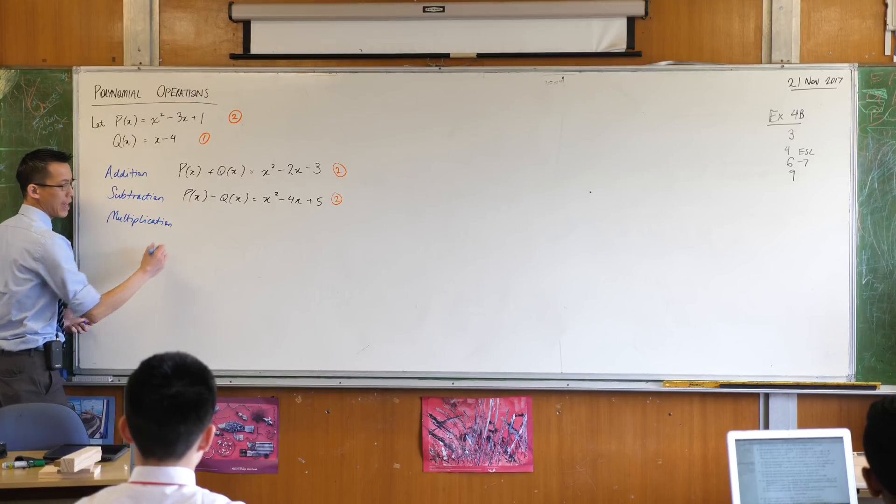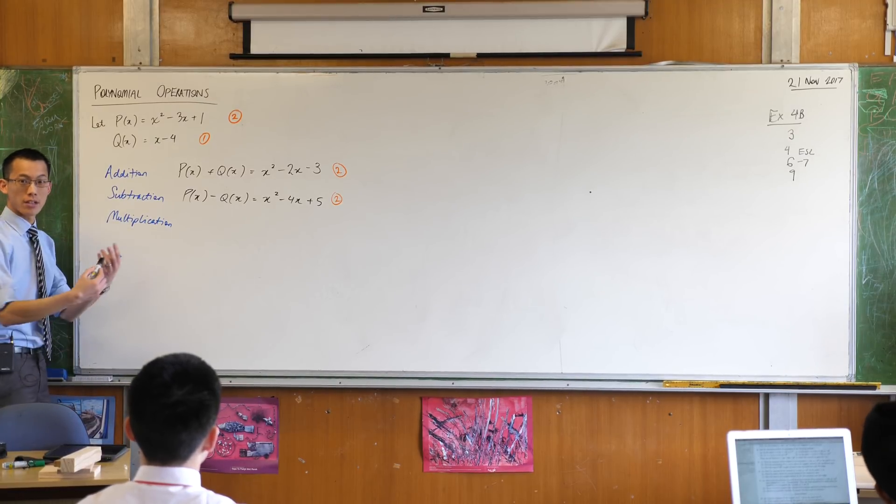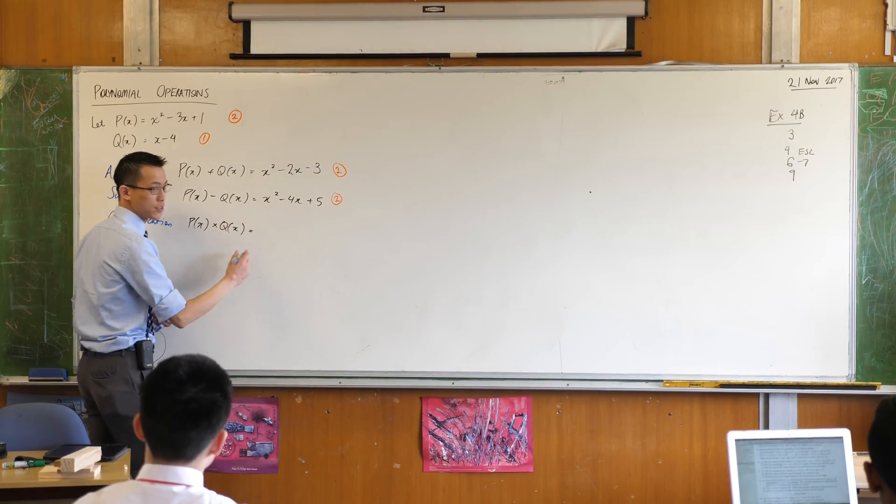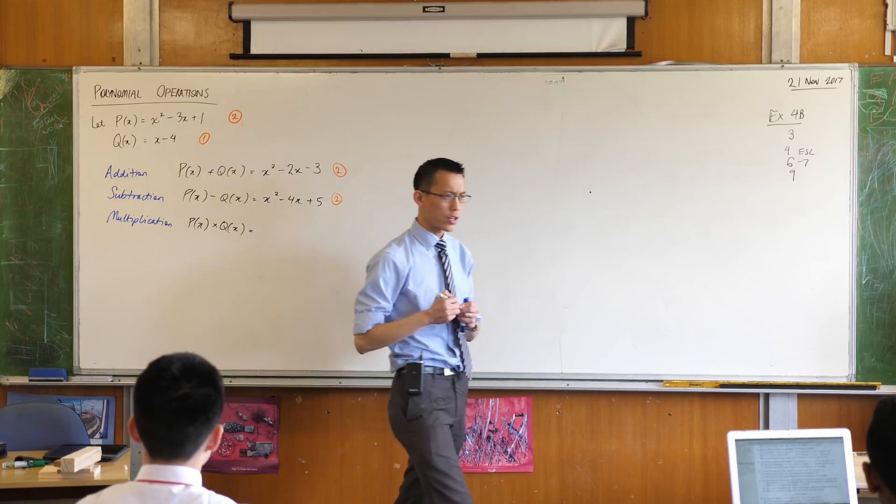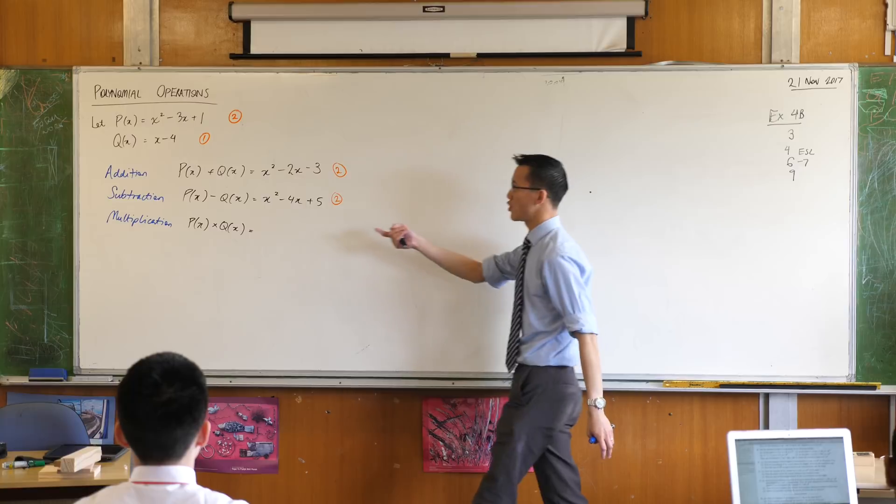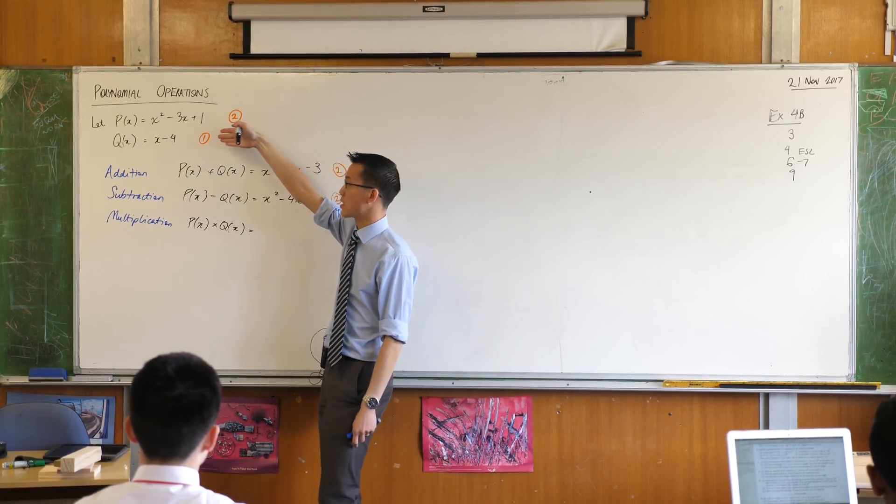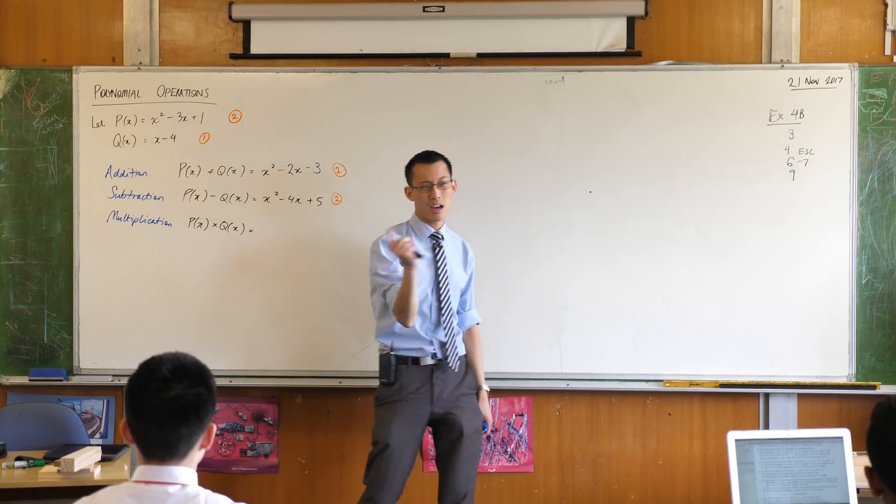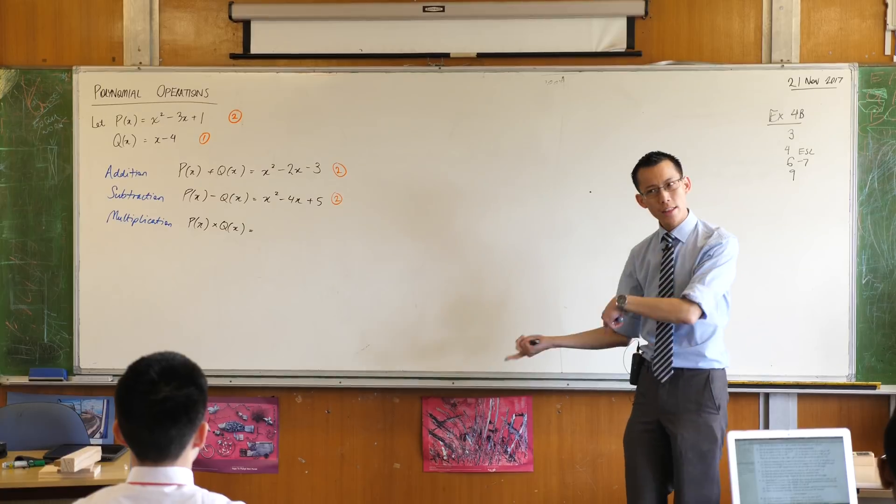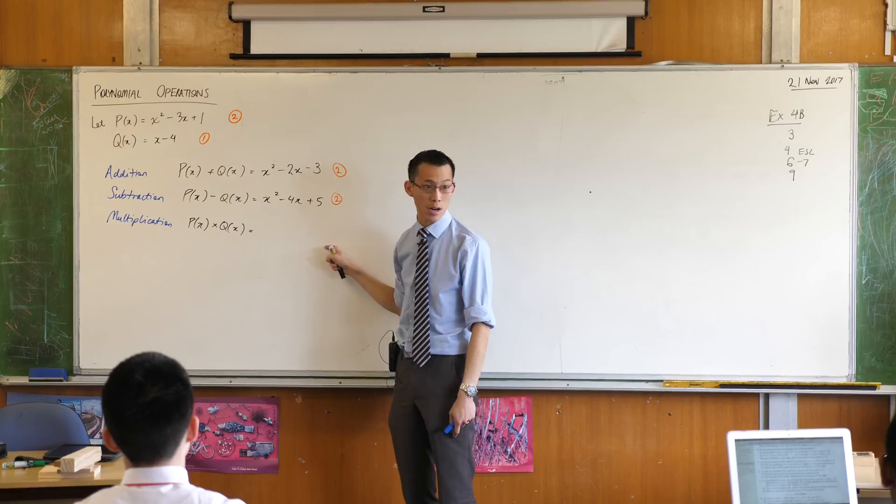If I instead don't add or subtract but multiply these two, if I say p of x times q of x, I want you to make a prediction. What's going to happen to the degree? Well, you've got degree 2 times degree 1. And these are just, well, you're just going to do some index laws stuff, right? So when you've got stuff which has a power of 2 and you multiply it by stuff which has a power of 1, what do you end up with? You get a power of 3. So the degree that I'm going to get here, if you put together a quadratic and a linear function, you'll end up with a cubic of some kind.